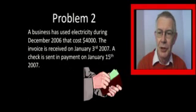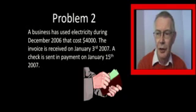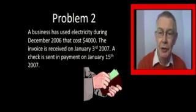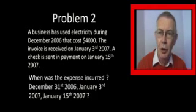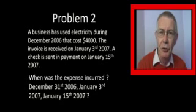A business has used electricity that cost $4,000 in December 2006. The invoice is received in January 2007 and the cheque is sent out later in January 2007. When was the expense incurred — in 2006 or in 2007?